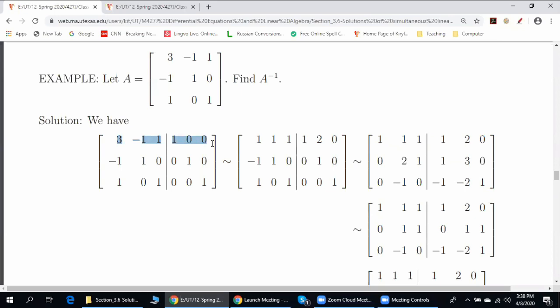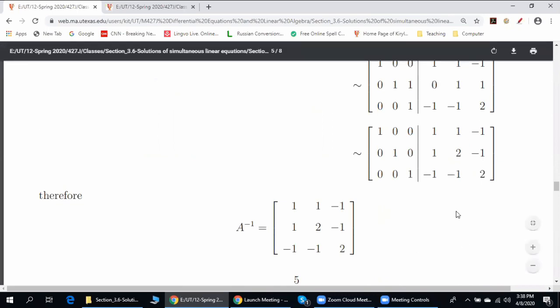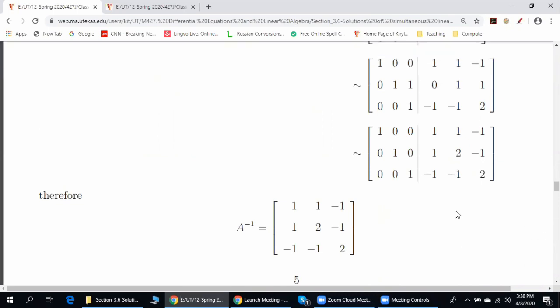And it doesn't matter which choice we make? Absolutely, it does not matter which sequence of elementary row operations we apply. Once we get I on the left, on the right, we'll get inverse. And A inverse is unique. Okay. Other questions?